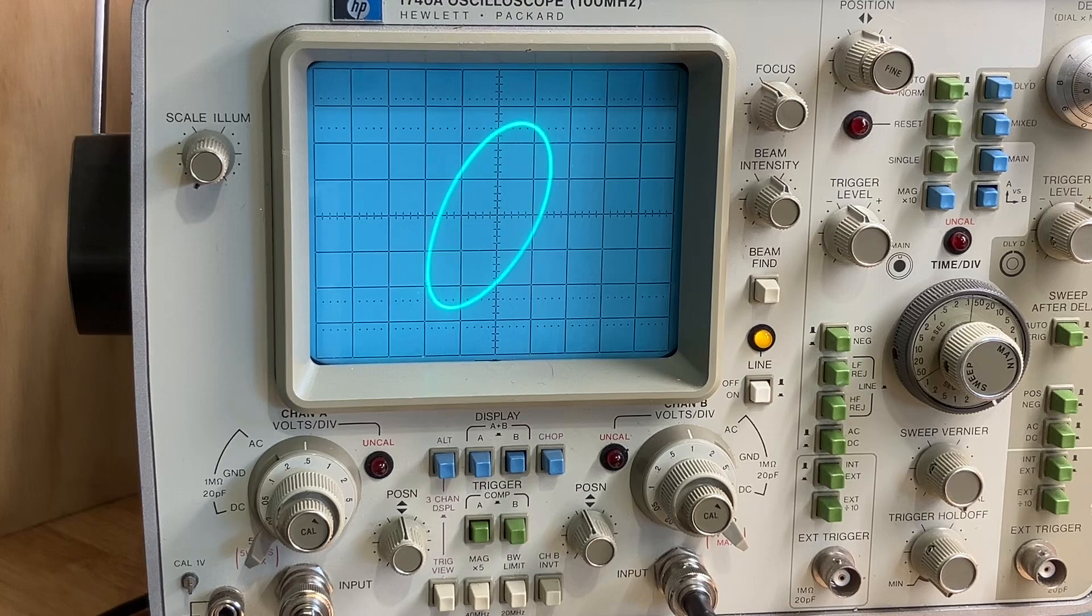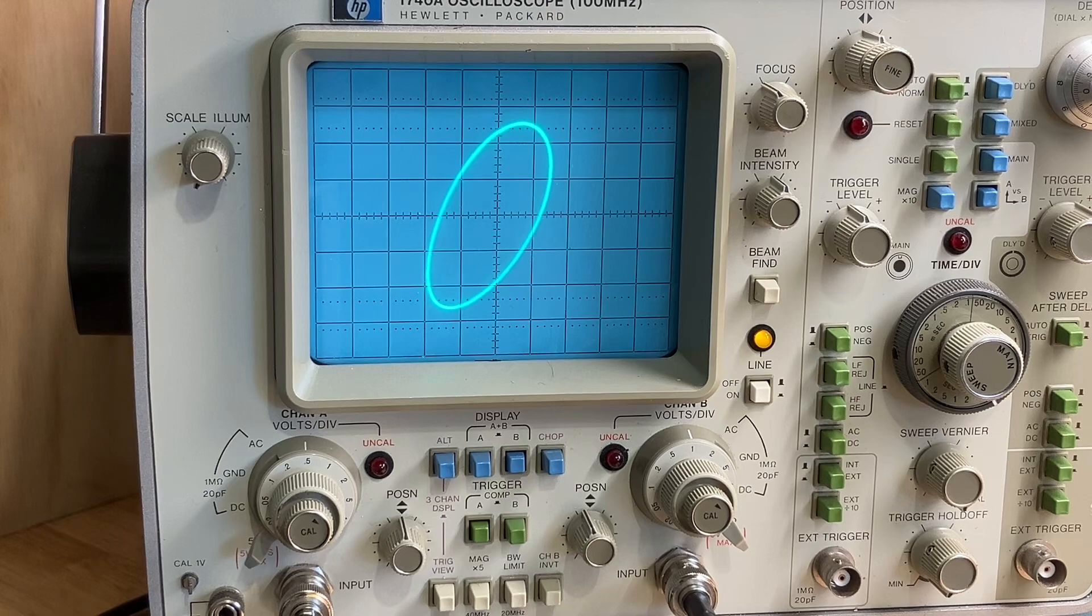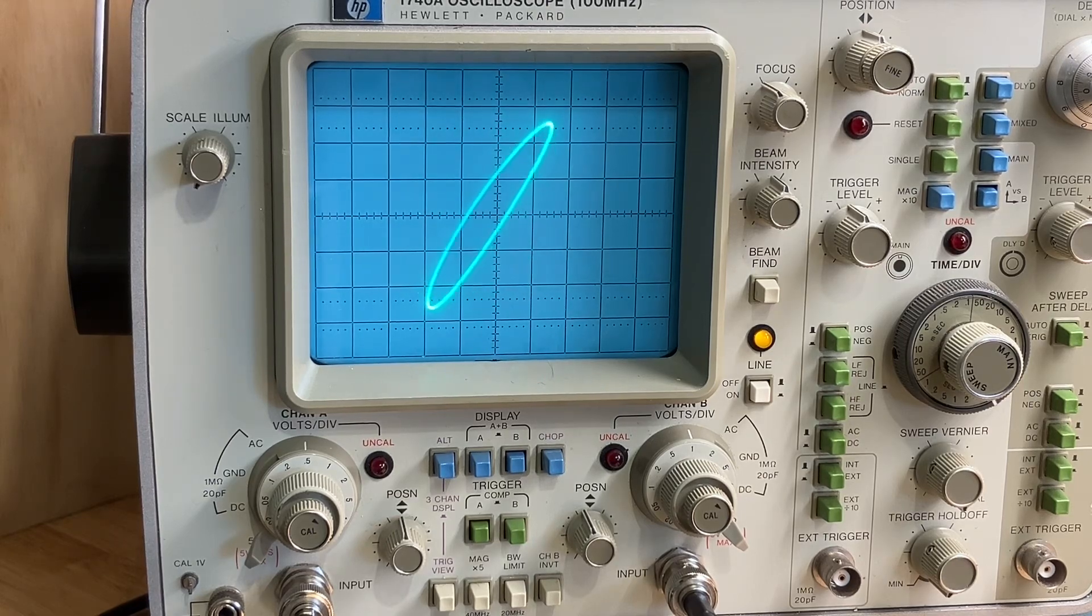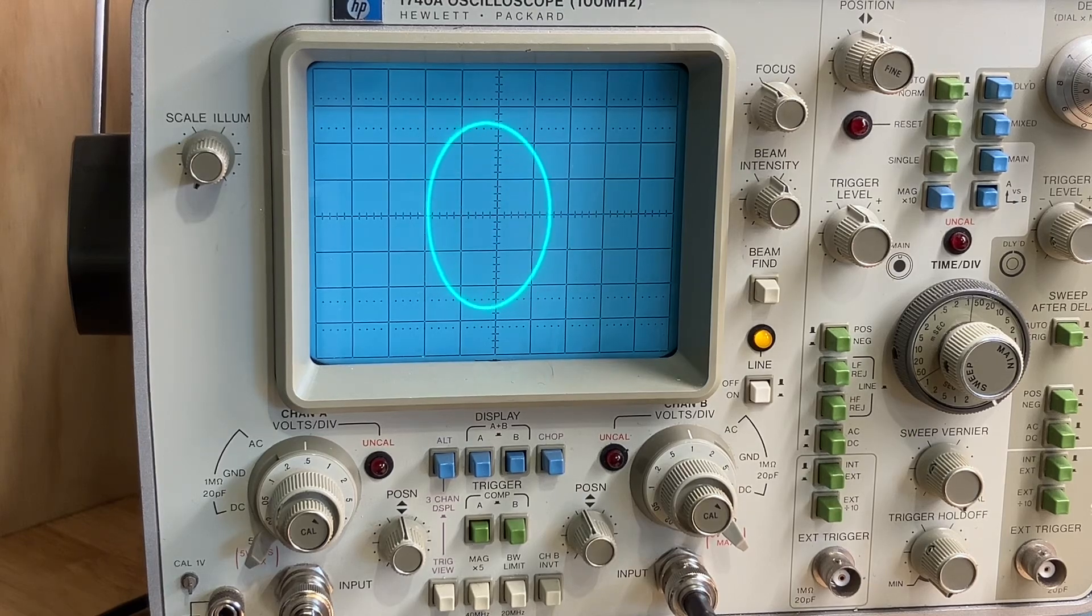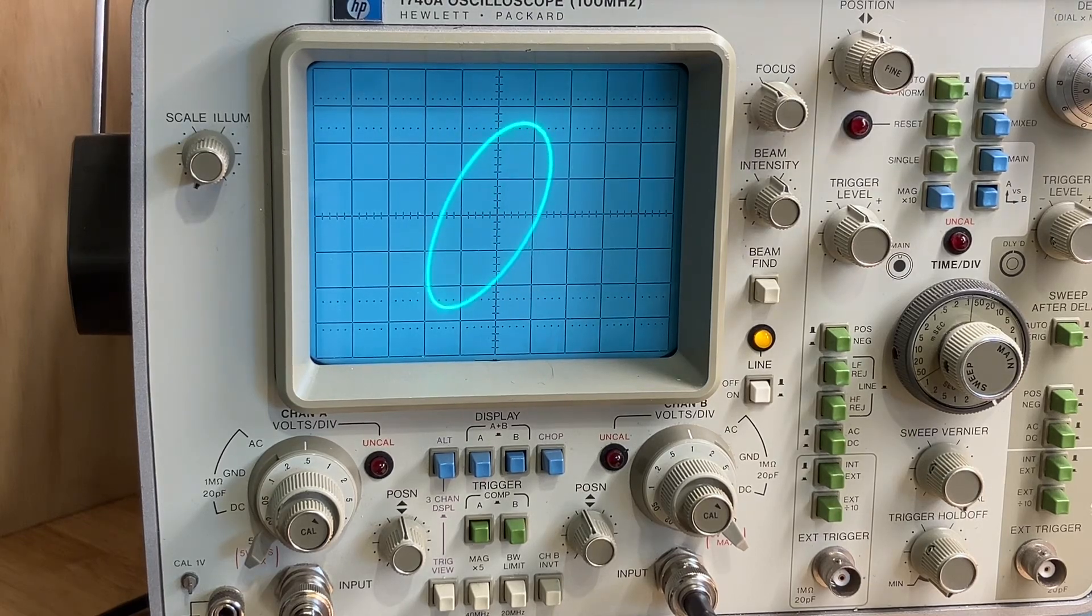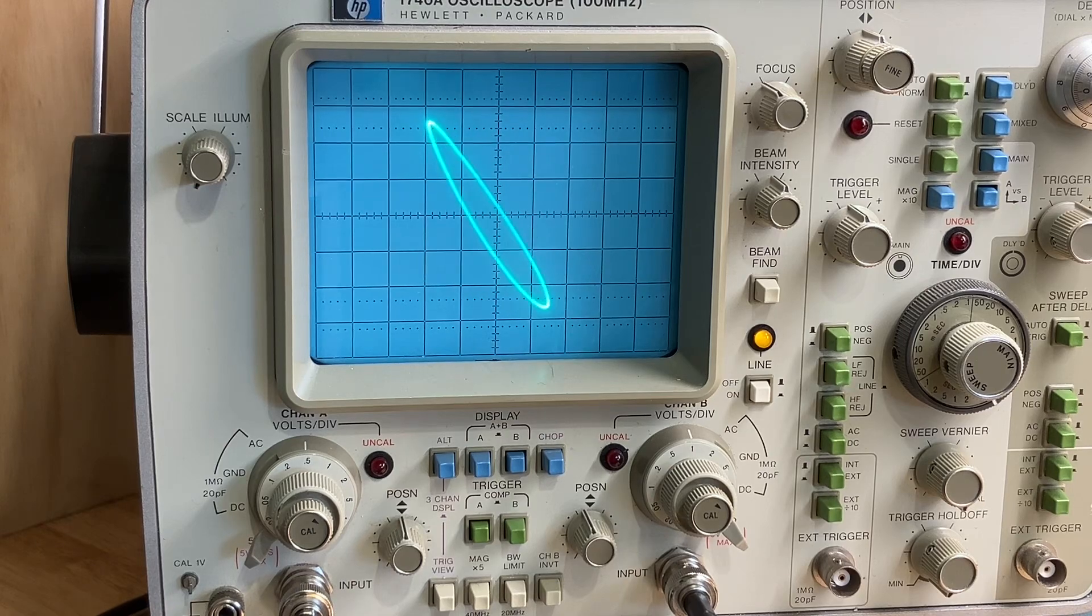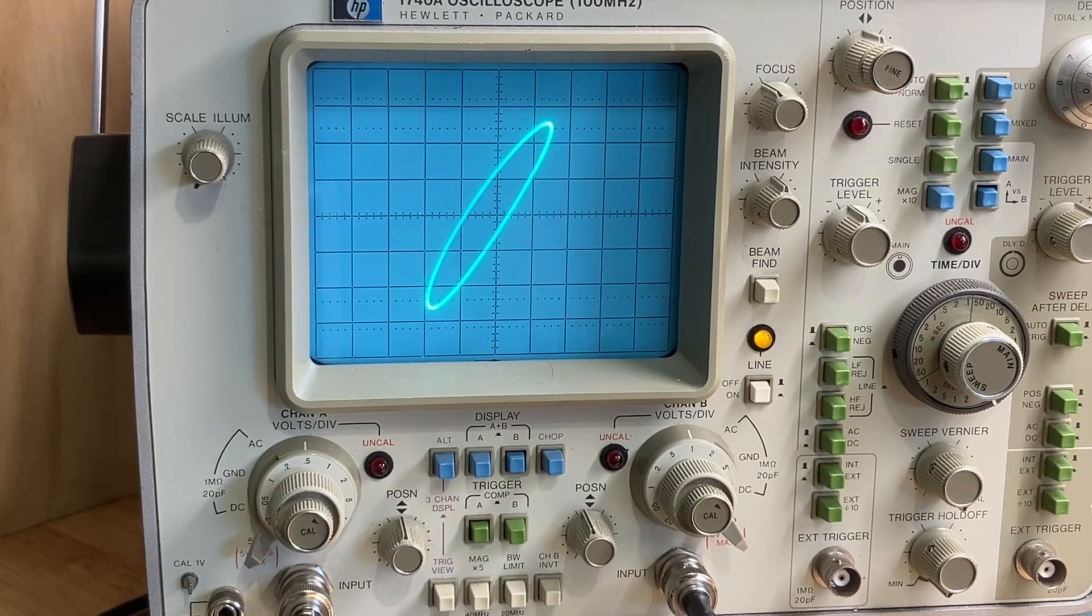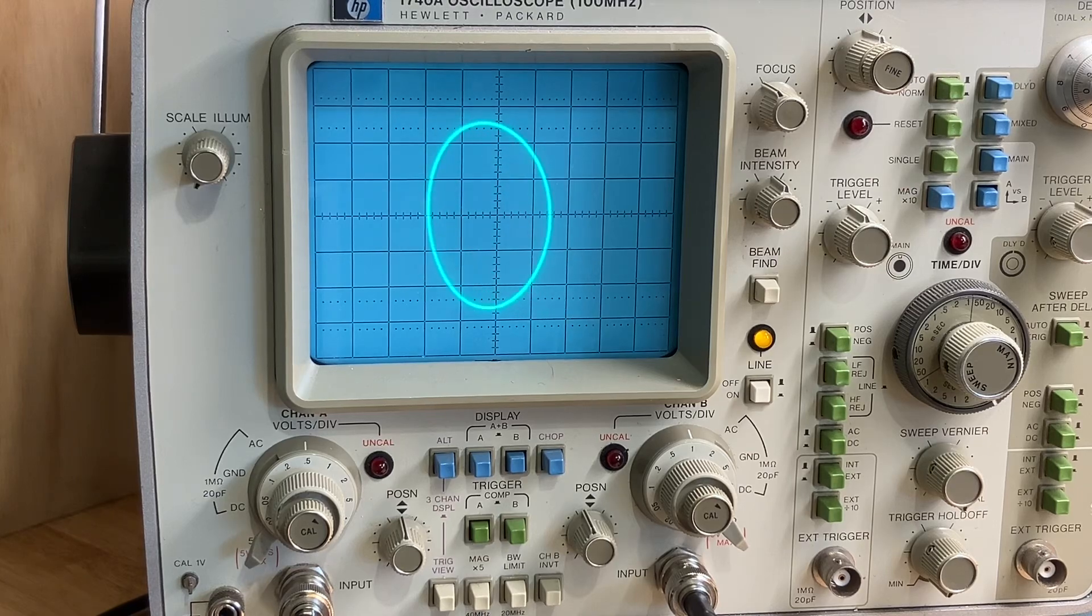So after letting it run for a couple of hours, it seems like nothing has actually changed. It still seems to be the same error. So what you're looking at is the Lissajous pattern between the OCXO in my 5328A frequency counter and the new GPSDO unit. Looks to be about, my 5328A looks to be about 0.2 Hertz off, something like that.